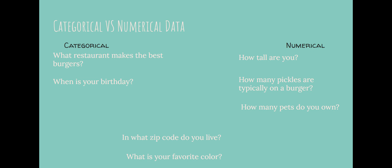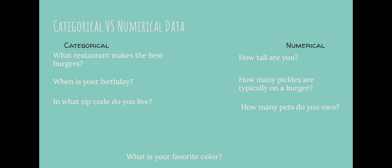In what zip code do you live? Is that categorical or numerical? That is categorical. Even though zip codes are written in numbers, it's still categorical data because ultimately when I'm asking you what zip code you live in, I'm asking about the category of zip codes, which is talking about your neighborhood. This is basically the same question as what neighborhood do you live in, and that's answered with words.